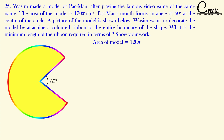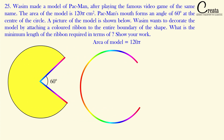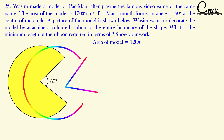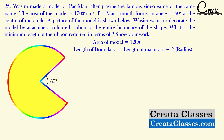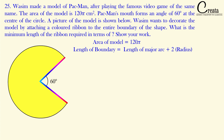We have to calculate the boundary of this model, which means the length of the arc plus these two radii. Note that the two radii are also part of the complete boundary. Do not make the mistake of only calculating the major arc and forgetting to add the radii. So the length of the boundary equals the major arc plus radius plus radius, or twice the radius.